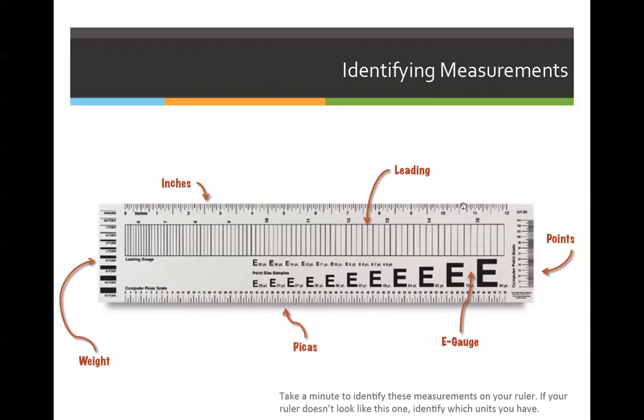Across the top, this should look familiar to us, it's what we're going to focus on today. It's inches. On the bottom, we have picas. On the right-hand side, we have points. We have an E gauge, which is used to measure how large font is. And then we have a leading gauge, and we don't specifically cover leading in this class, but leading is measured from the baseline of one line of type to the baseline of another.